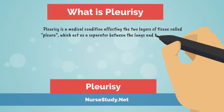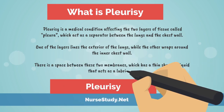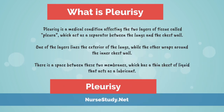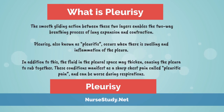Pleurisy is a medical condition affecting the two layers of tissue called pleura, which act as a separator between the lungs and the chest wall. One of the layers lines the exterior of the lungs, while the other wraps around the inner chest wall. There is a space between these two membranes, which has a thin sheet of liquid that acts as a lubricant. The smooth gliding action between these two layers enables the two-way breathing process of lung expansion and contraction.